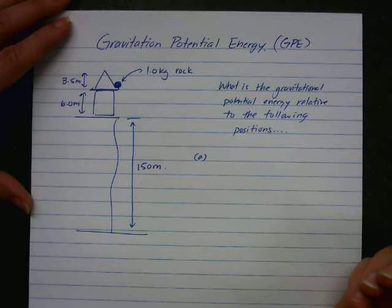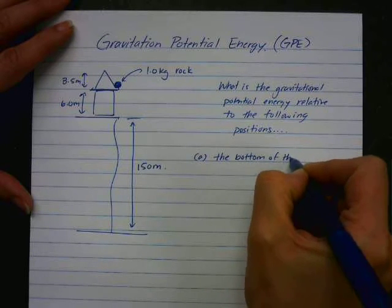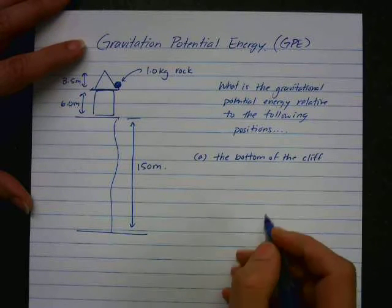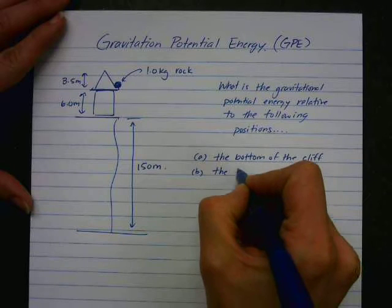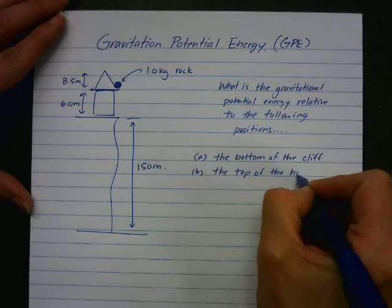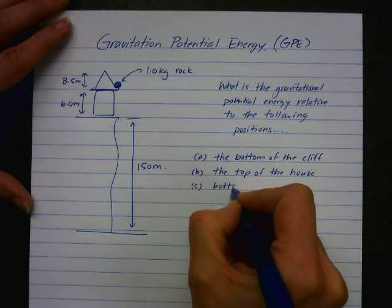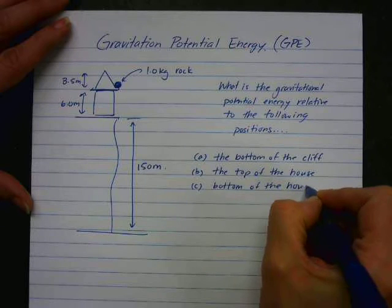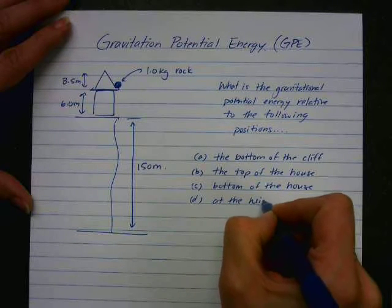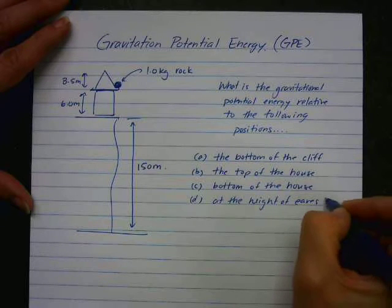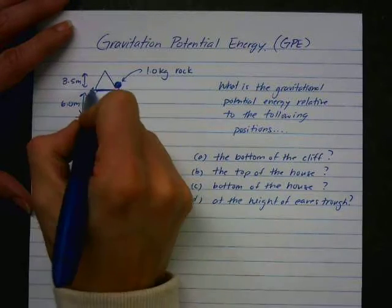So A, the bottom of the cliff. B, relative to the top of the house. C, bottom of the house. And D, at the height of the eaves trough. If you don't know where the eaves trough is, the eaves trough is here.